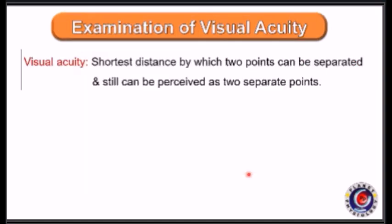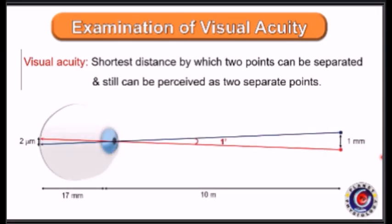Let us begin with visual acuity. It is the shortest distance by which two point objects can be separated and still be perceived as two separate points. As seen in this diagram, when two closely placed point objects make a visual angle of one minute, they will be perceived as two separate points.